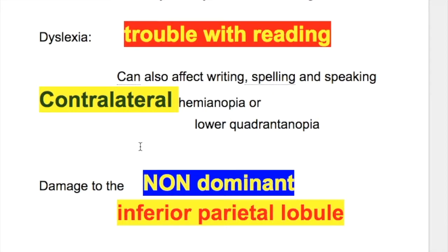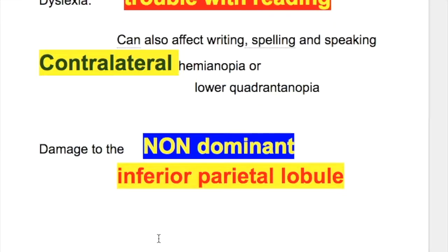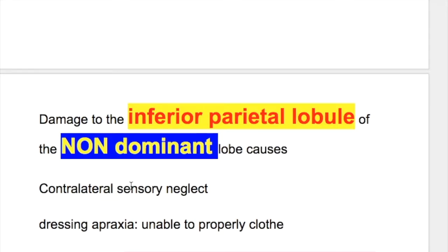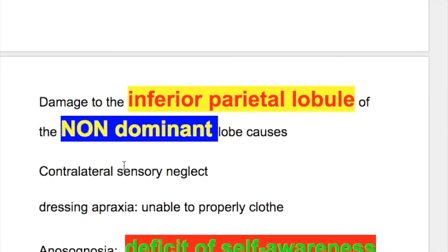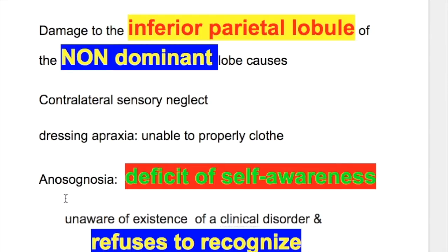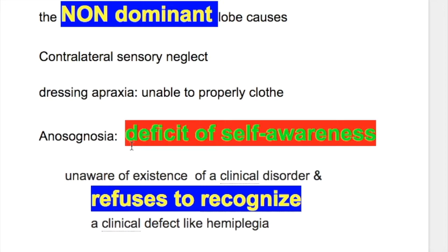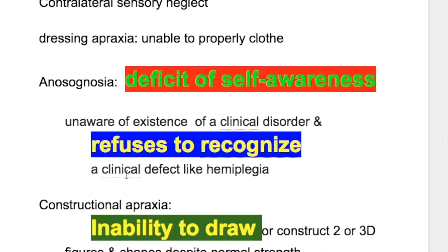Damage to the non-dominant inferior parietal lobule causes contralateral sensory neglect. Second, dressing apraxia — the patient is unable to properly clothe himself. Third, anosognosia, which is a deficit of self-awareness where the patient is unaware of the existence of a clinical disorder and refuses to recognize a clinical defect like hemiplegia.